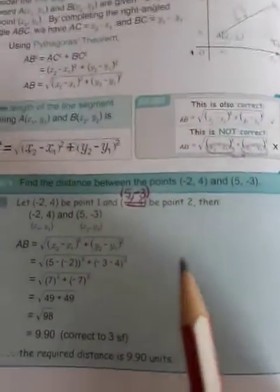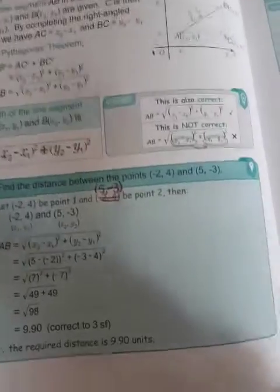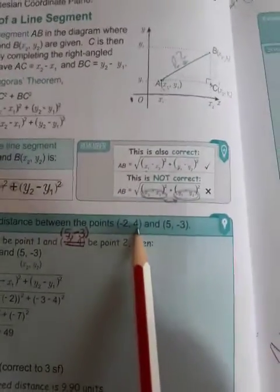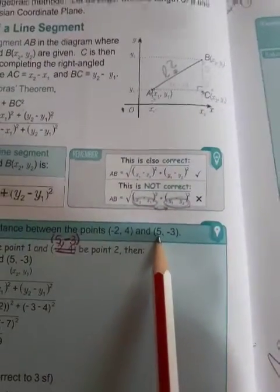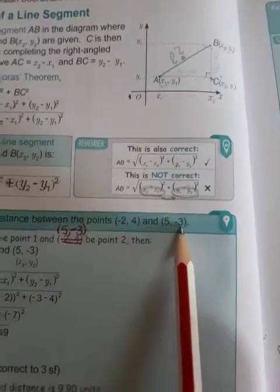Now without any further ado, let's look at the following question. It says you must find the distance between two points. The one is given as negative 2, 4 and the other one is given as 5, negative 3.